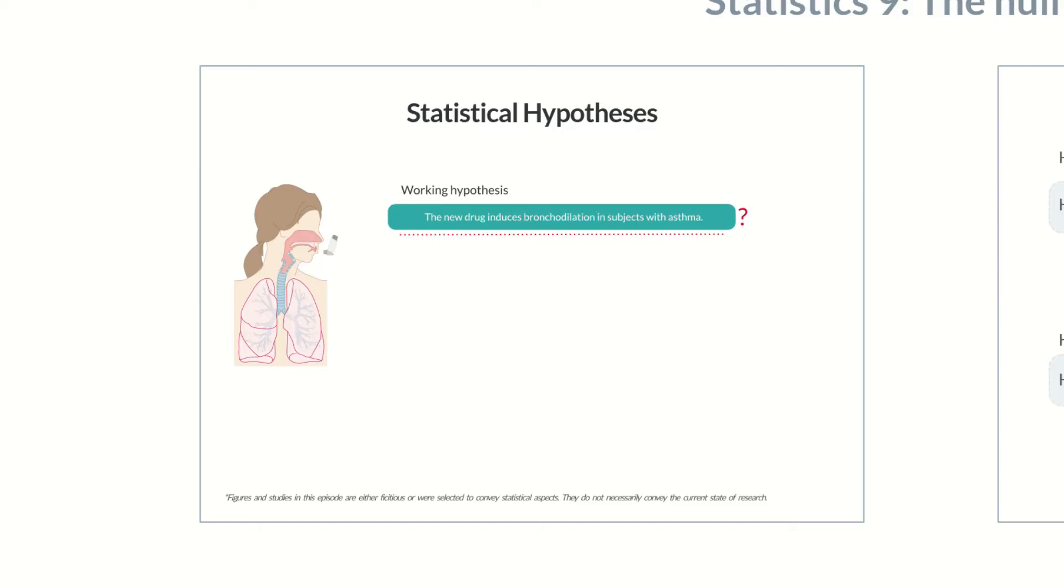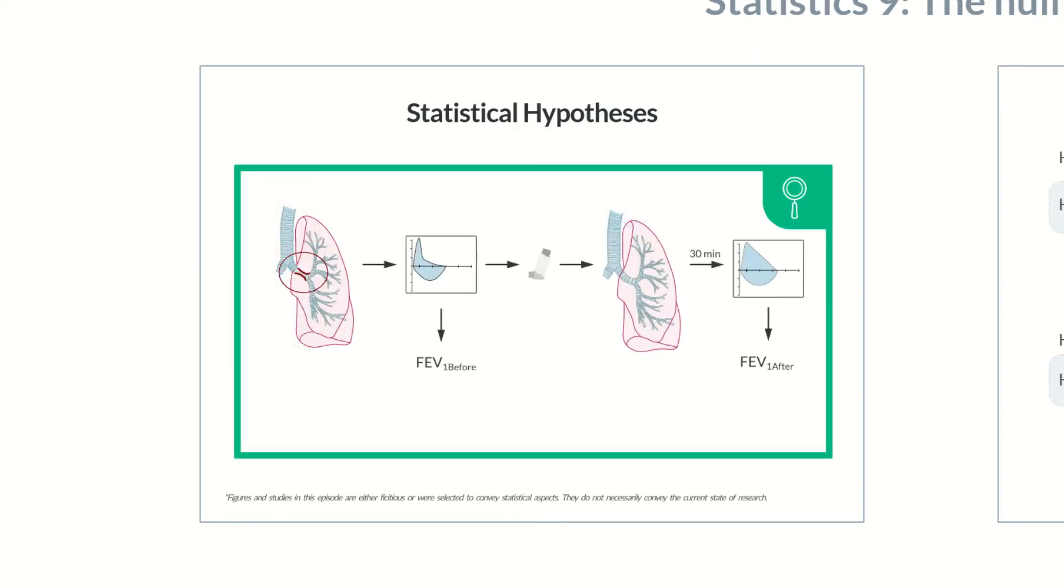Now, the pharmaceutical company decides to perform pulmonary function tests to assess potential bronchodilation. Specifically, they decide to use the change in forced expiratory volume in one second, abbreviated as FEV1, before and 30 minutes after taking the drug.